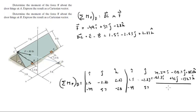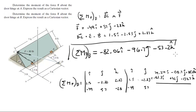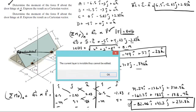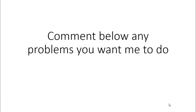Adding them together, the moment about B equals negative 82.06i minus 96.7j minus 53.2k. That is the final answer for the moment the force creates about point B. Please comment below if you want me to do any problems and I'll be happy to help — thank you.